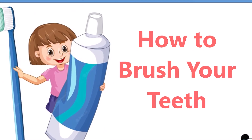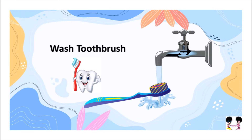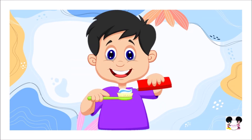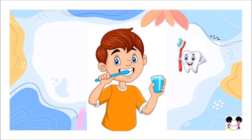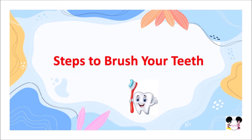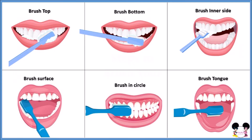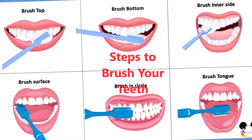Make sure you wash your toothbrush in clean water — that's very important. Then apply a pea-sized amount of toothpaste on your bristled area. Now let's see the steps in brushing your teeth. Are you all ready?